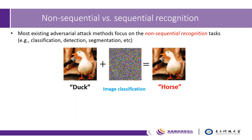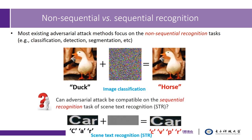It is notable that most existing adversarial attack methods focus on non-sequential recognition tasks, such as classification, detection, segmentation, and so on. And here is a question: can adversarial attack be applied to the sequential recognition task of scene text recognition?